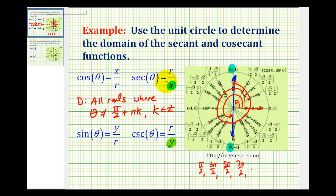And again this is the domain for the secant function. Now let's talk about the domain of the cosecant function. We can determine which angles to exclude by determining where the y coordinate would be zero.